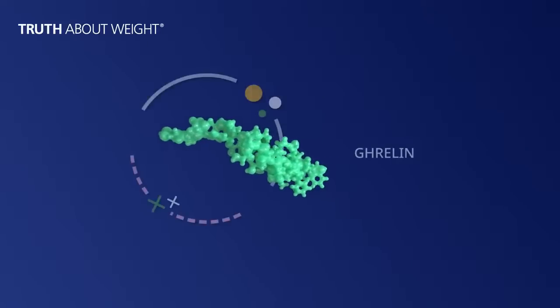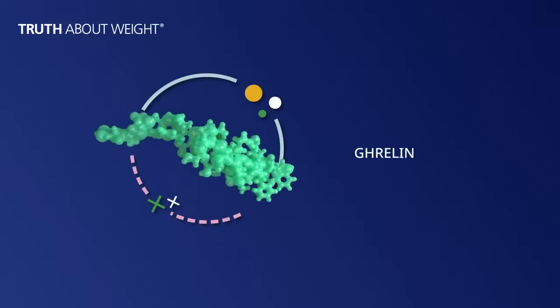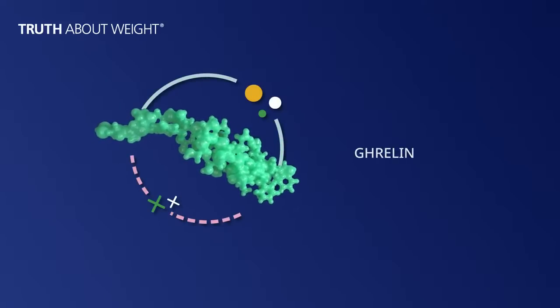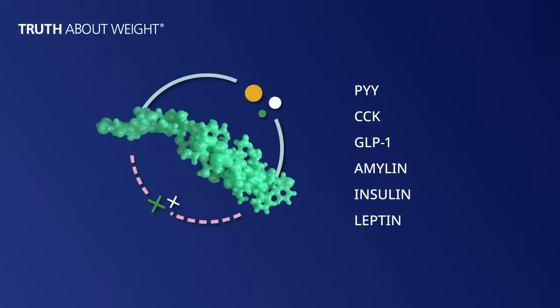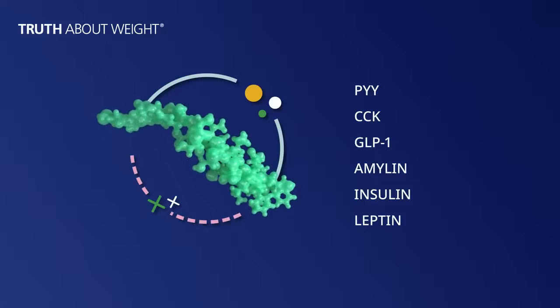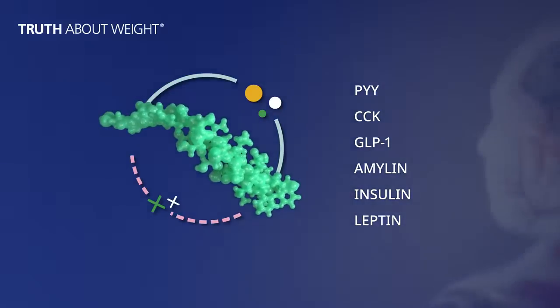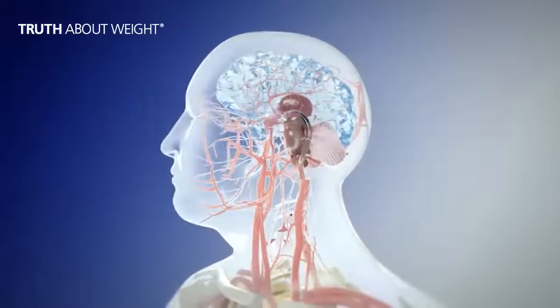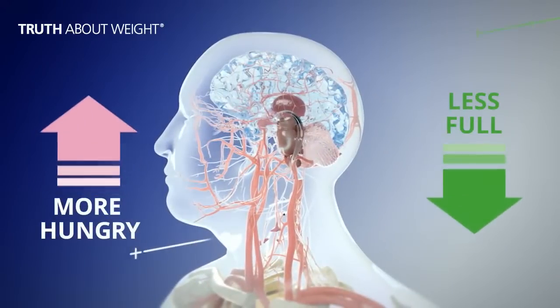The hunger hormone called ghrelin increases after weight loss, while appetite hormones that help us feel full decrease. When this happens, it may signal to the brain that we feel more hungry and less full, which causes us to eat more.